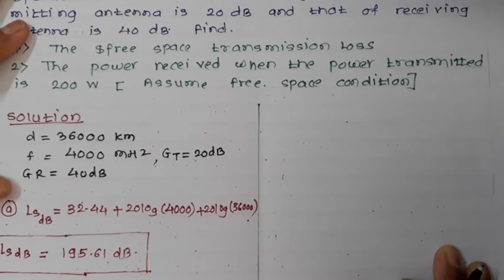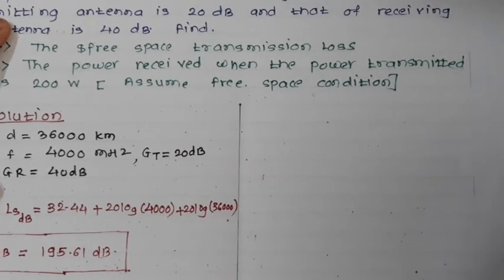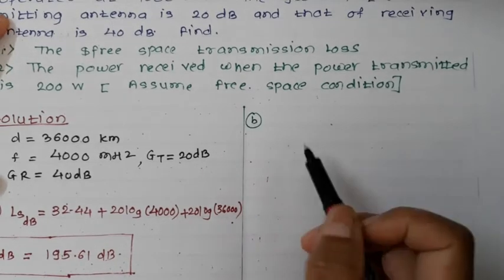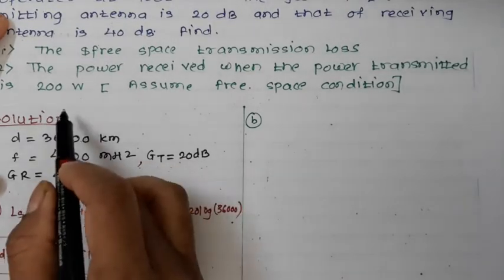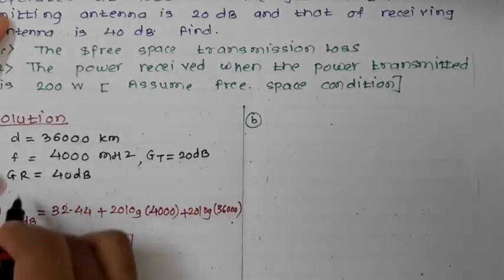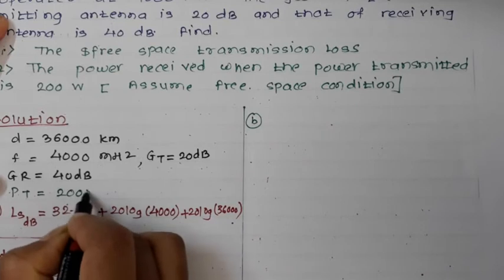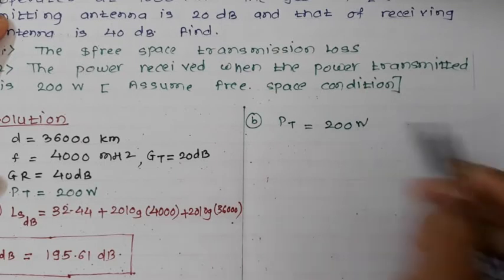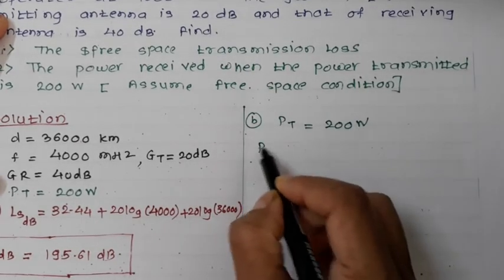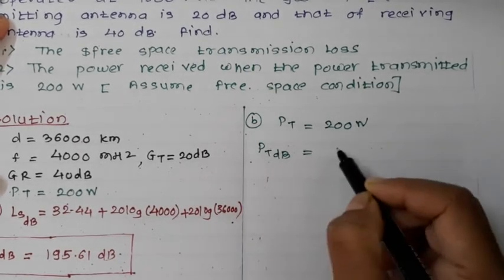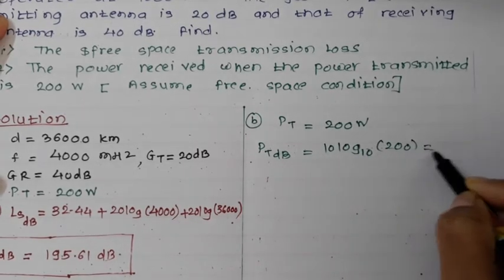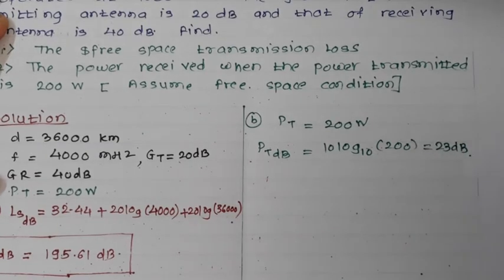Next we calculate the received power. The transmitted power is PT = 200 watts. We need to convert this into dB: PT (dB) = 10 log₁₀(200) = 23 dBW.